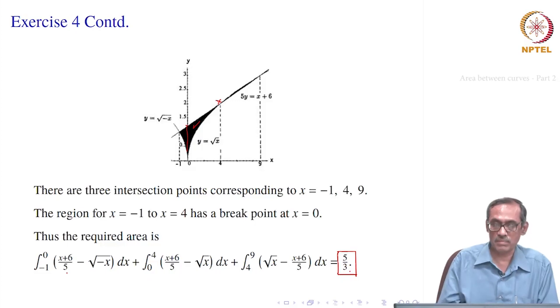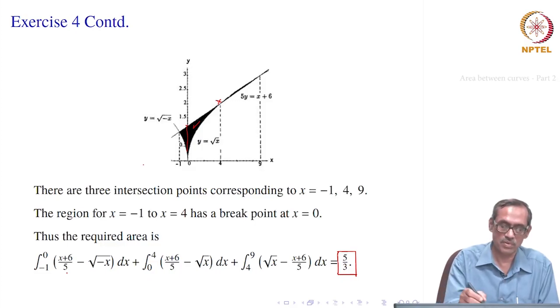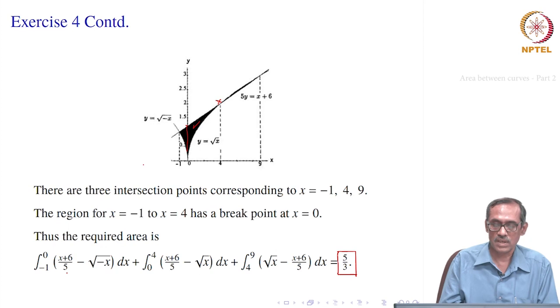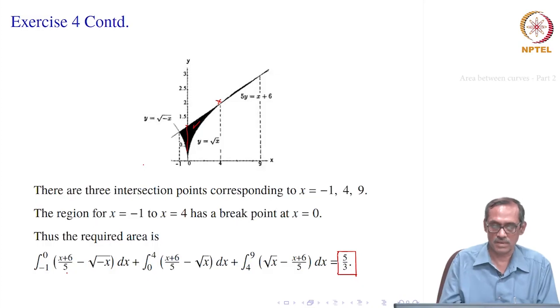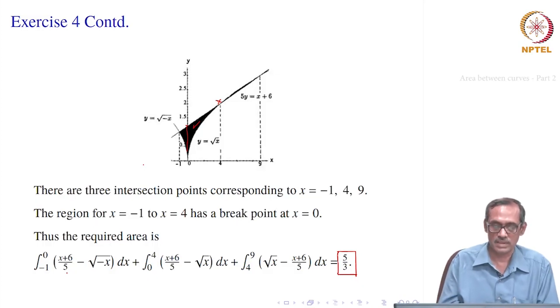Sometimes plotting becomes necessary to identify spurious solutions that are not actually forming bounded regions. In this problem, x = -36 did not form any bounded region, so it had to be excluded.